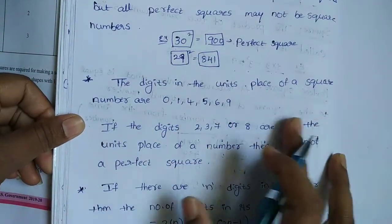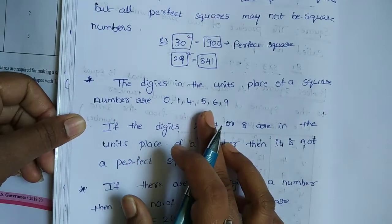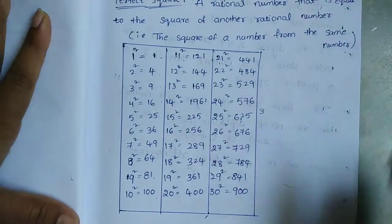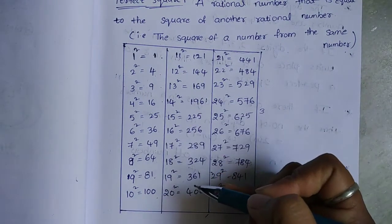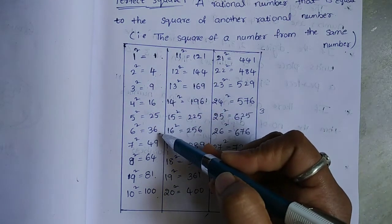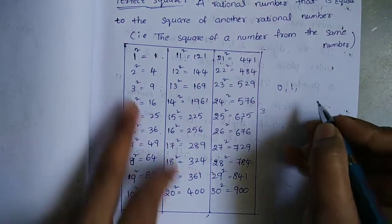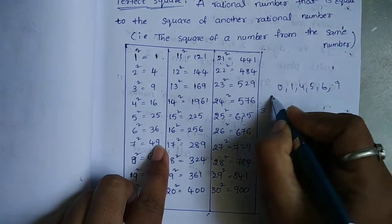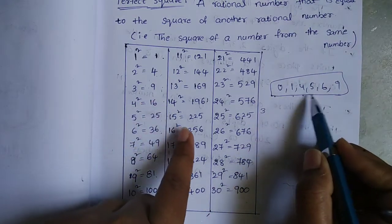The digits in the units place of a square number are 0, 1, 4, 5, 6, and 9. The digits in the units place of a square number are 0, 1, 4, 5, 6, and 9.